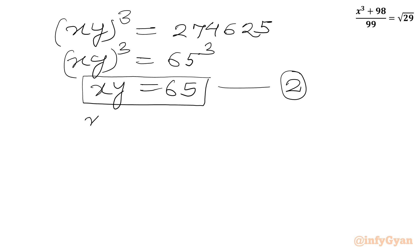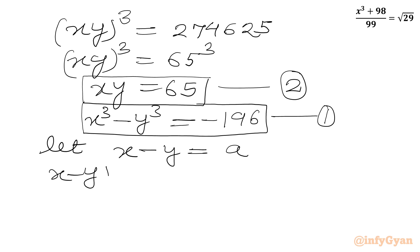So let us write our first equation: x cubed minus y cubed equals minus 196. Now let us assume x minus y equals a, and I will use the identity x minus y whole cube. Using the a minus b whole cube formula, we can write x cubed minus y cubed minus 3xy times x minus y.